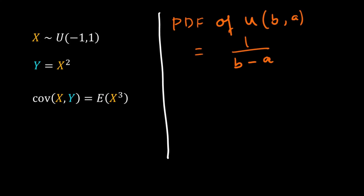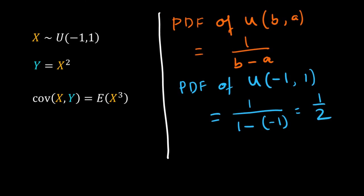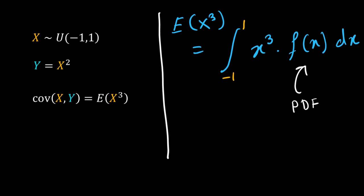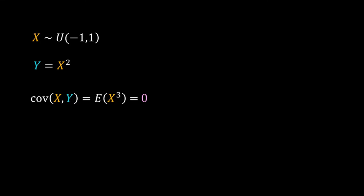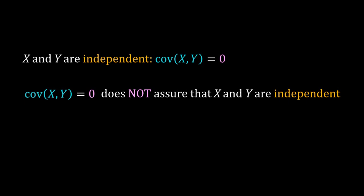The PDF of a uniformly distributed random number between a and b is 1/(b minus a), so the PDF of X between minus 1 and 1 is 1/2. The expectation of X cubed equals the integral of X cubed times the PDF from minus 1 to plus 1, and the result is 0. So the covariance of X and Y is 0, but X and Y are not independent. Therefore, when X and Y are independent the covariance is 0, but a zero covariance does not assure that two random variables are independent. That's all for this video.